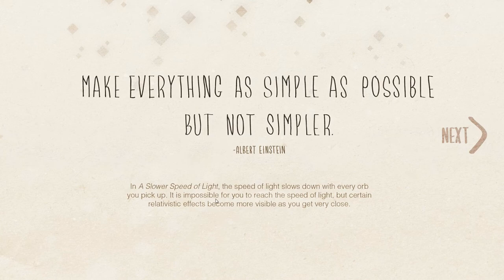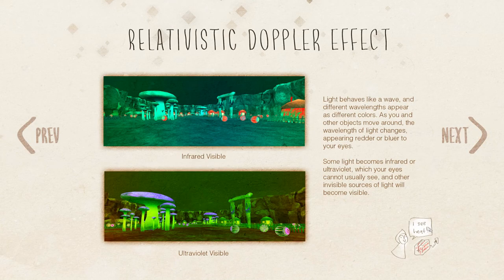Well, that's the whole E=MC² thing, right? More or less, yeah — or is that just a conversion of energy to mass? That always has to stay constant and the speed of light has to be constant for it to work. So in A Slower Speed of Light, the speed of light slows down with every orb you pick up. It is impossible for you to reach the speed of light, but certain relativistic effects become more visible as you get very close. Light behaves like a relativistic Doppler effect.